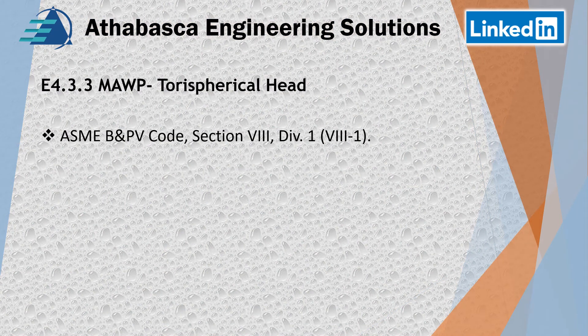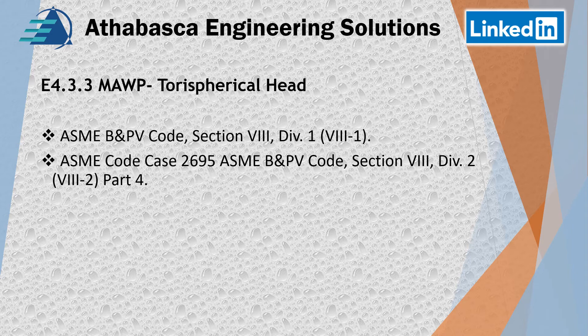Now we've looked at Division 1. We're going to jump into Code Case 2695. You're going to see how involved it is — a lot more steps — but there's some really interesting information you get from it. The Division 2 calculation looks at issues like buckling, which is quite interesting to go through. Would I go through this for a Division 1 calculation? Never — but here we go. This is the Division 2 approach.